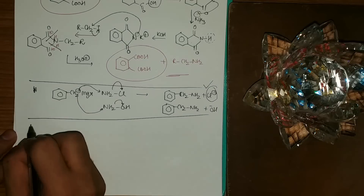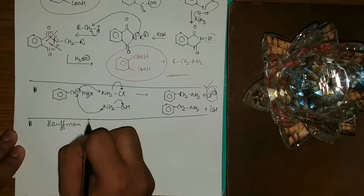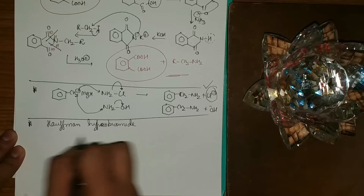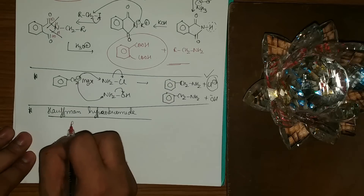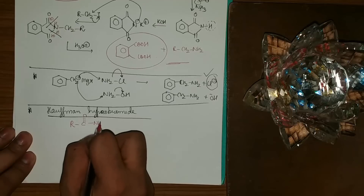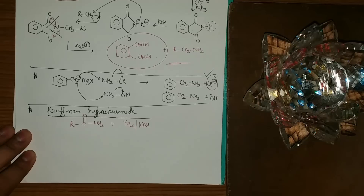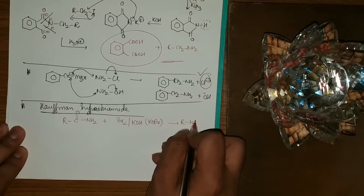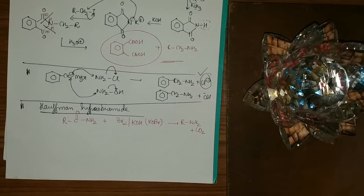The next very important reaction is the Hofmann Hypobromide reaction. If I take RCONH2 plus Br2/KOH — also written as KOBr — the product will be R-NH2 plus CO2. The mechanism is very important as it's one of the toughest reactions in this chapter.